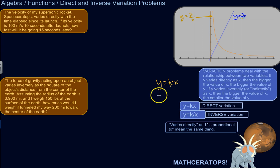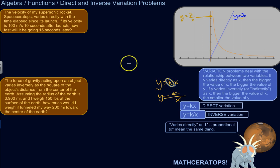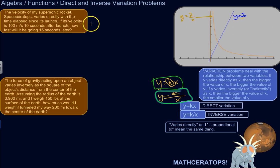If y varies inversely as x, then y equals some constant over x. The key for solving these inverse or direct variation problems is figuring out what that constant is. You set up the problem in either the direct or inverse form, then fill in the specifics.